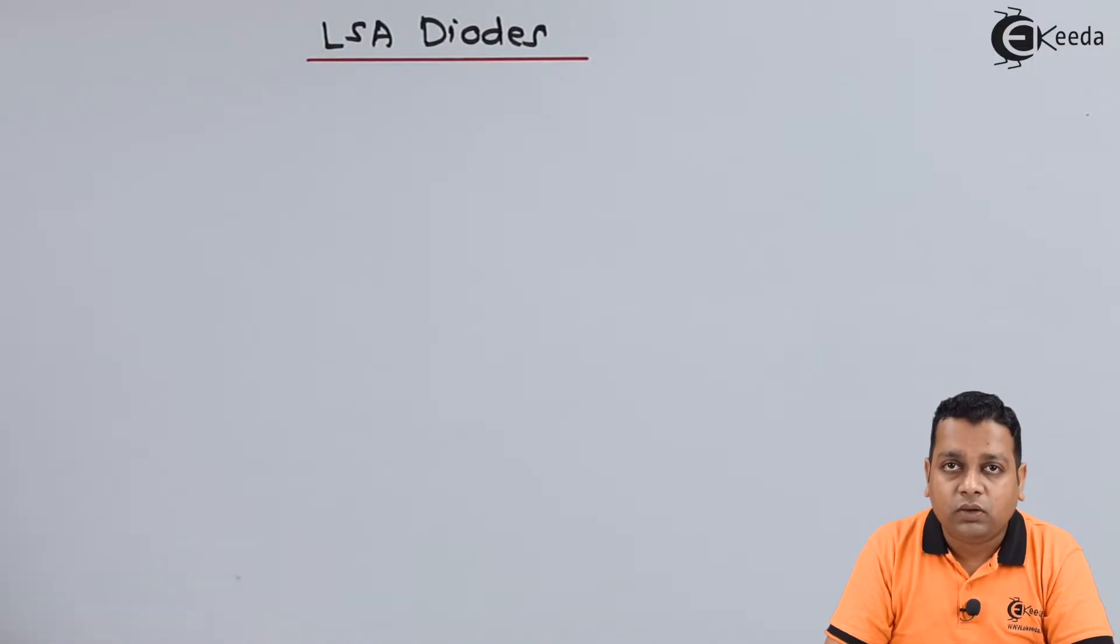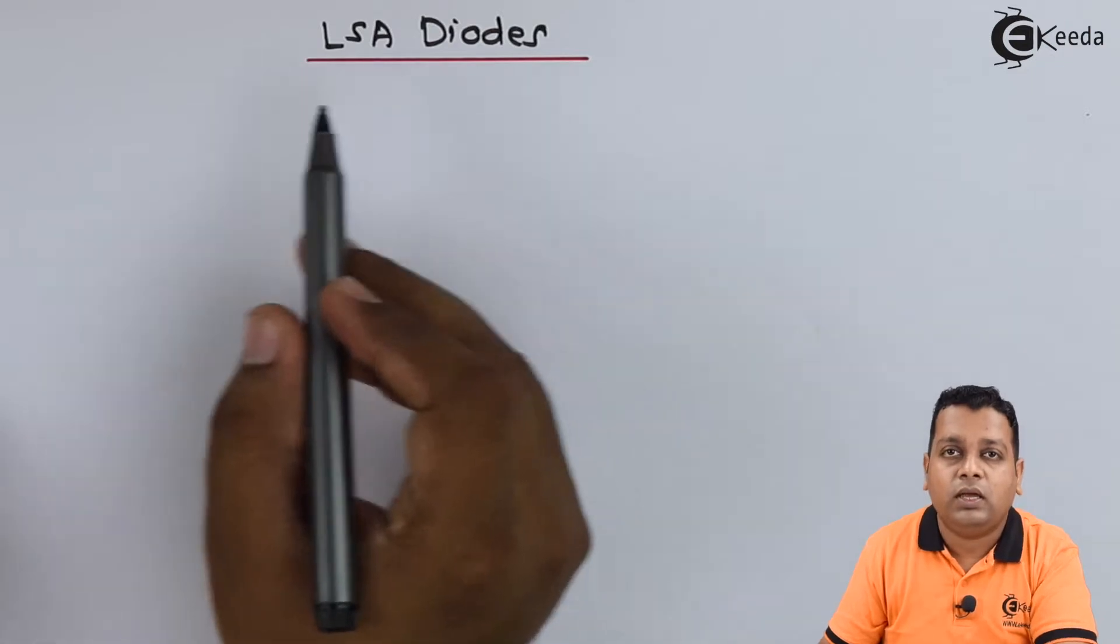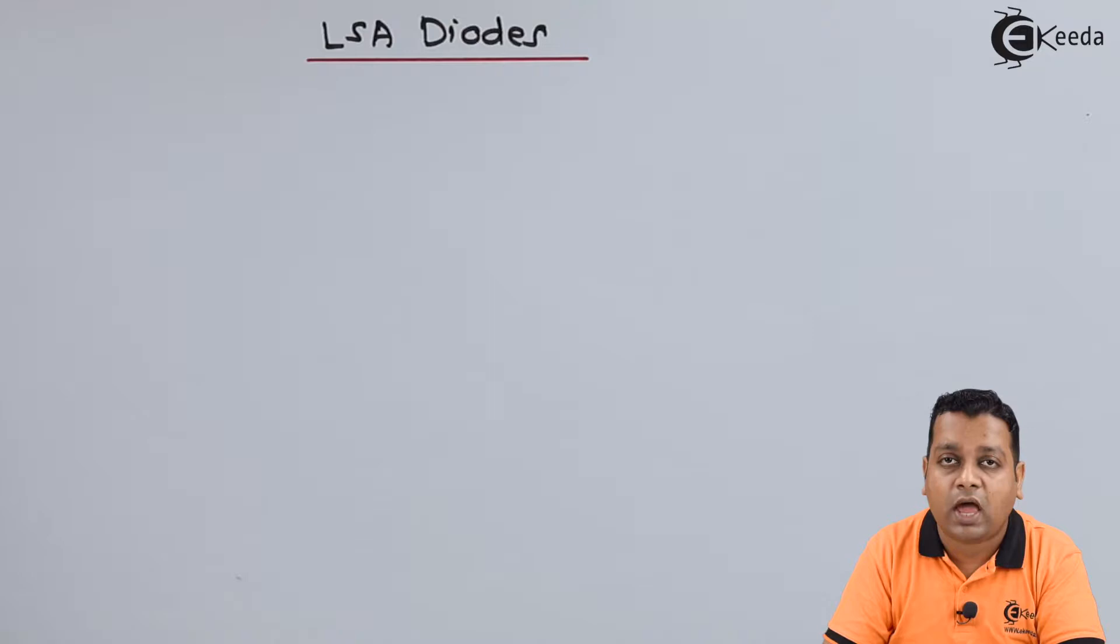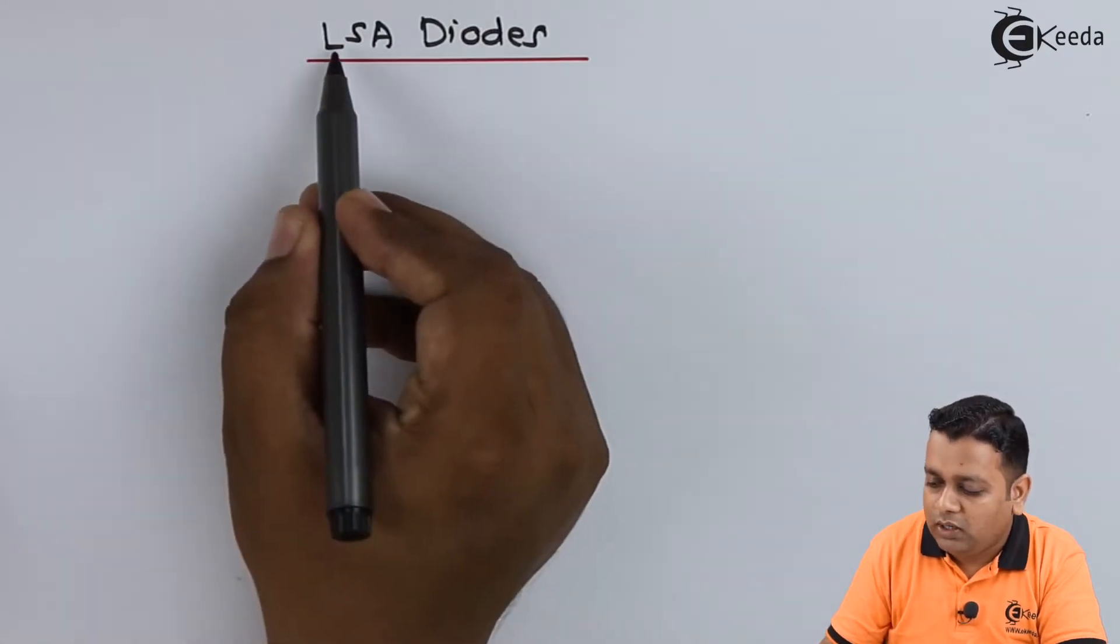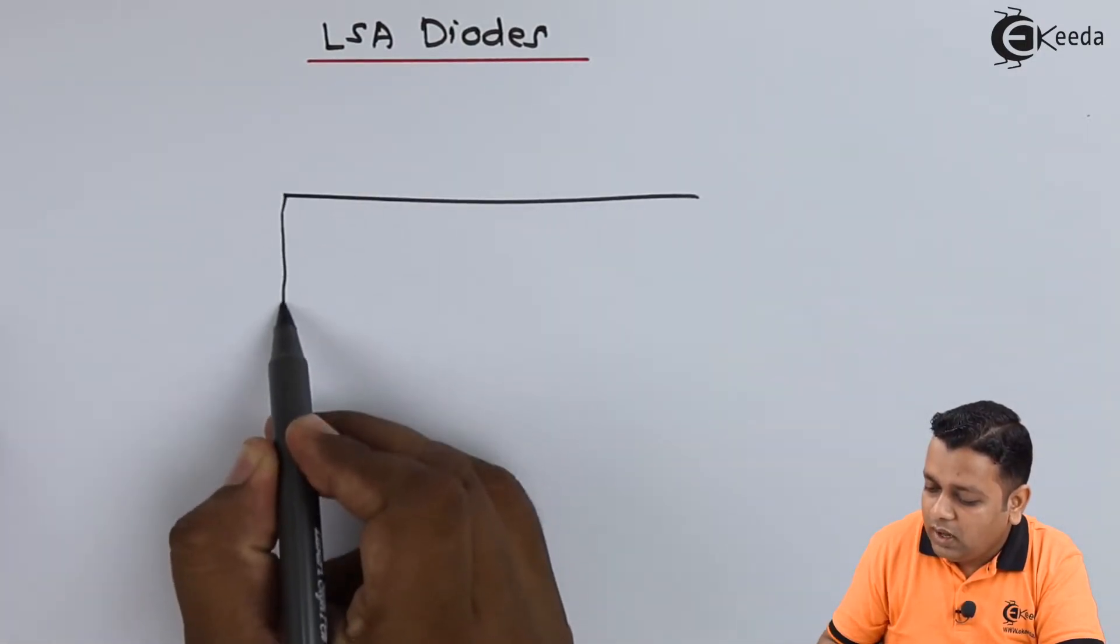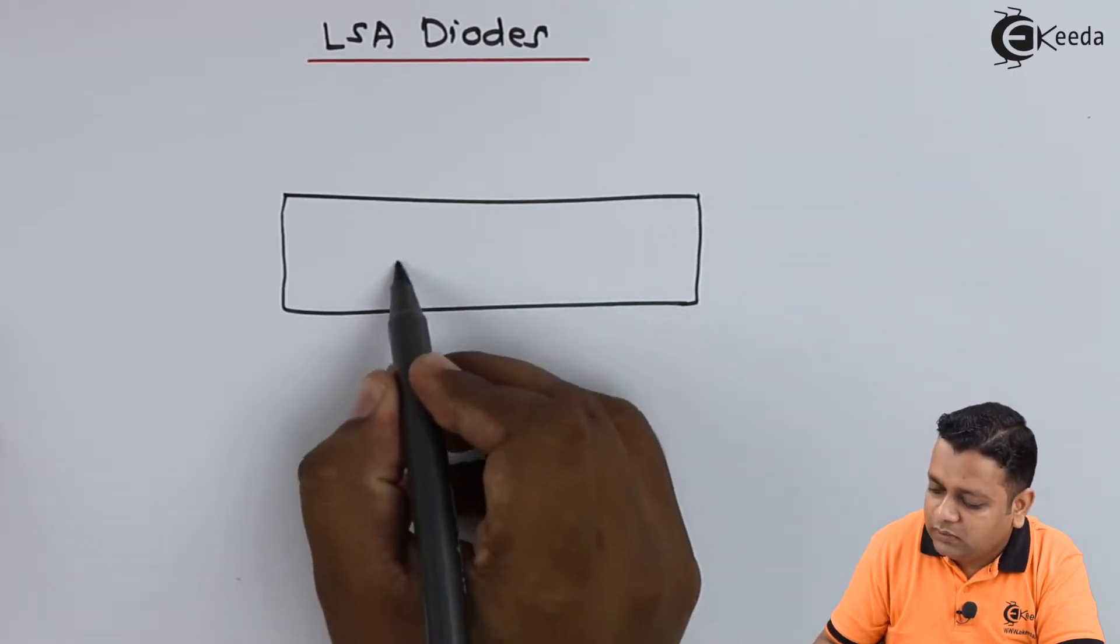So here we start with our topic LSA diode. LSA stands for limited space charge accumulation. For limited space we have LS, and for charge accumulation we have capital A. What is the charge that has a role in this particular diode? The answer is the electron when we take the semiconductor compound of n-type. For n-type, the majority charge carriers are the free electrons. So here we consider n-type gallium arsenide substrate.